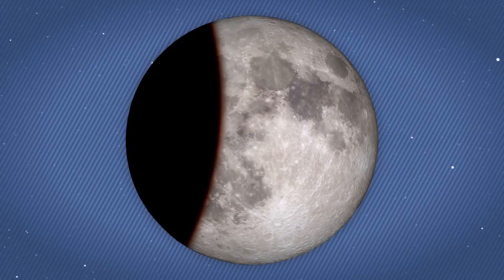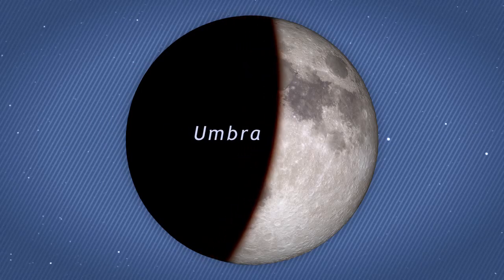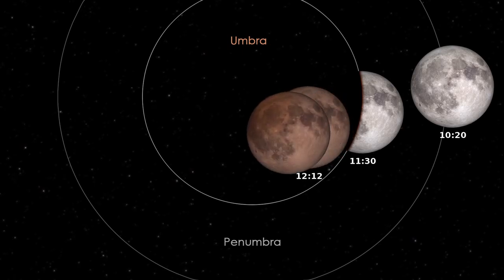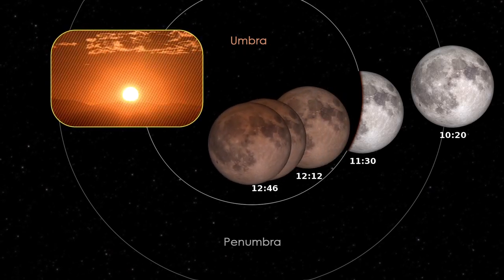As the moon passes into the central part of the Earth's shadow, called the umbra, it darkens dramatically. Once it's entirely within the umbra, the moon appears a dim red due to sunlight scattered through the Earth's atmosphere.